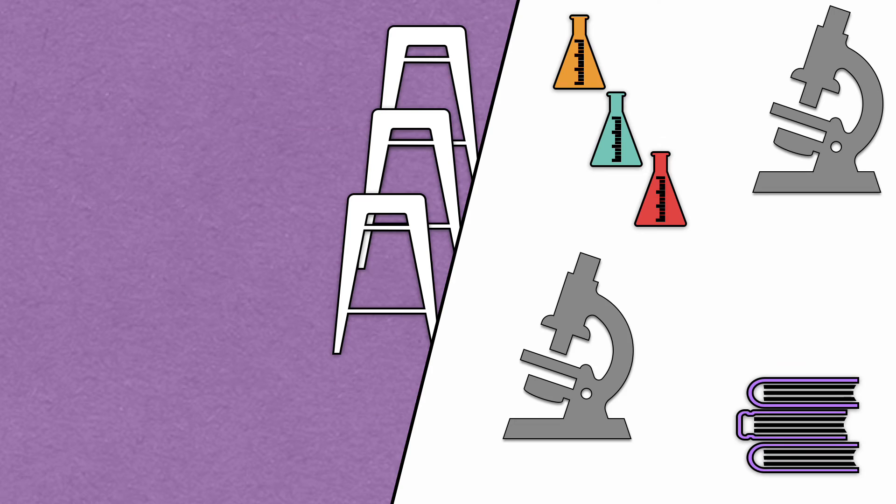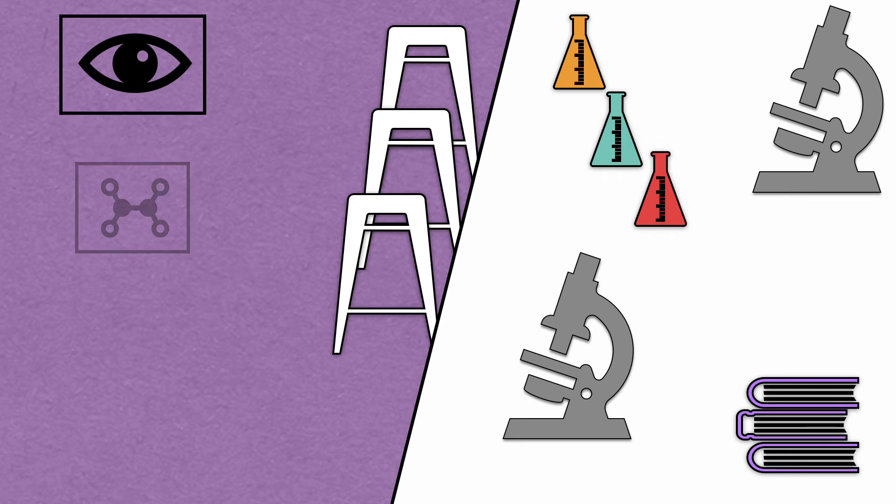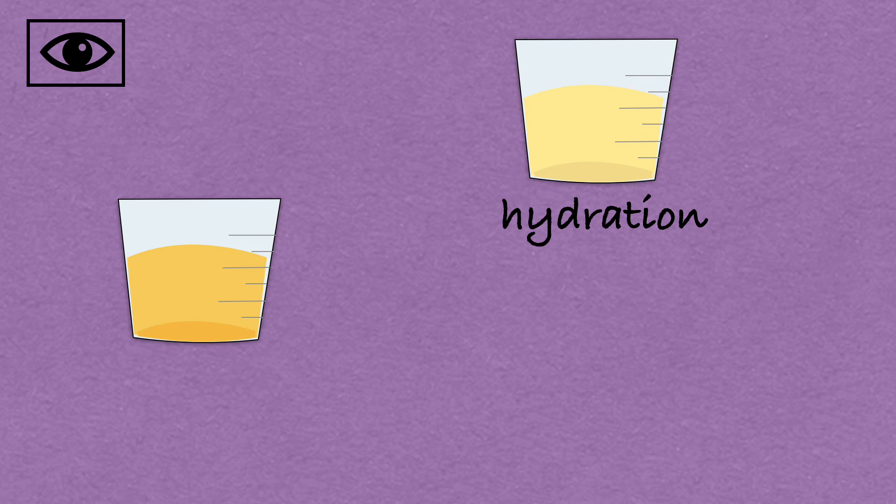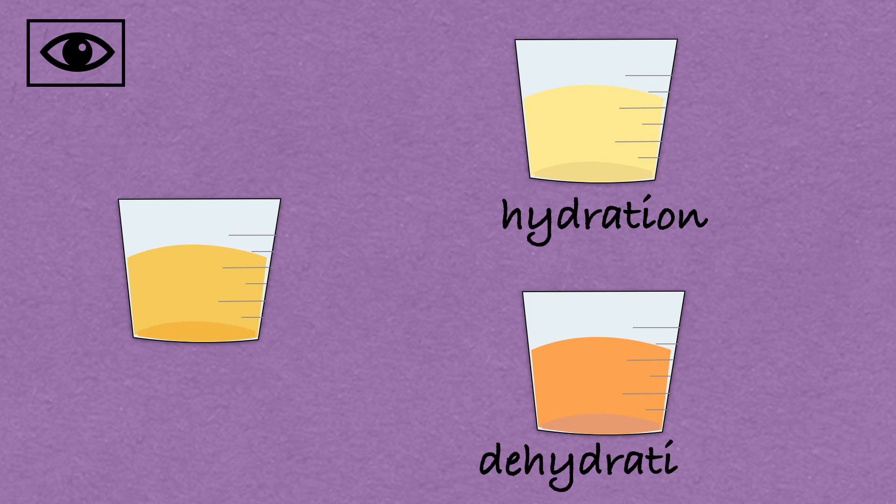In the laboratory, urine can be evaluated by physical appearance, chemical composition and microscopically. Normal urine has a yellow hue due to a pigment called urochrome. Recent diet and medication can change urine color. Drinking more water causes a lighter color and a dark color can be an indicator of dehydration.